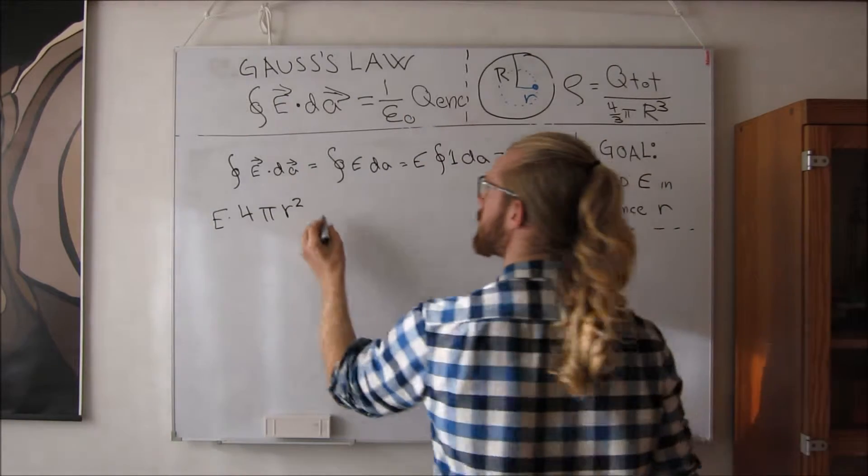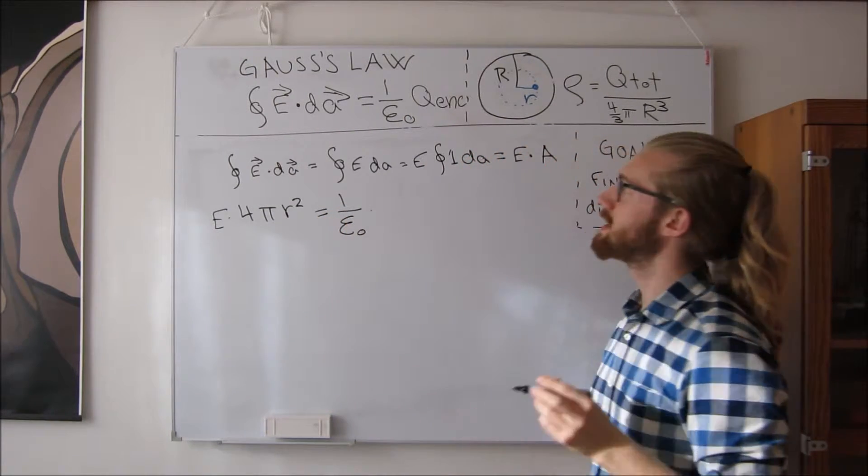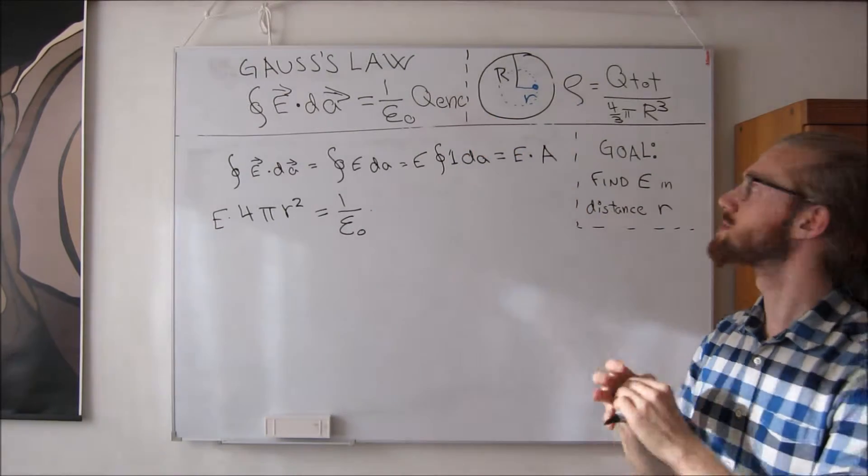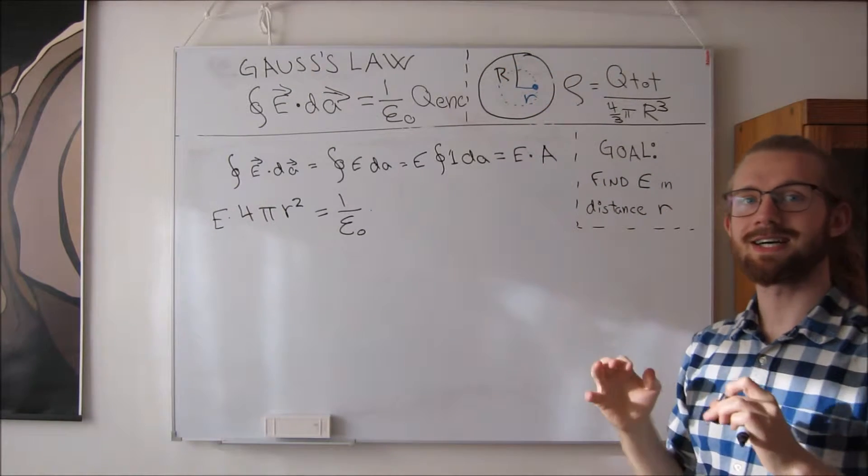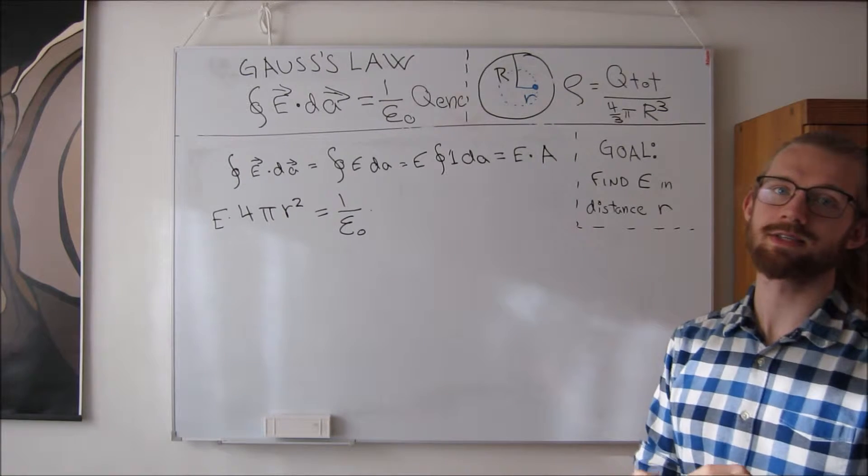We need to take 1 over epsilon and multiply with the total charge enclosed. So if we look at this blue shell here, we need to consider how much charge is enclosed, how much charge is captured by the shell.